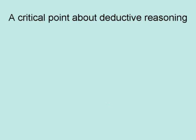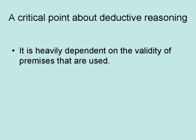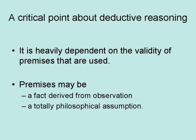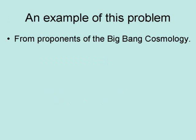A critical point about deductive reasoning is that it is heavily dependent on the validity of the premises that are used. Premises may be a fact derived from observation or a totally philosophical assumption. An example of this problem comes from proponents of the big bang cosmology.